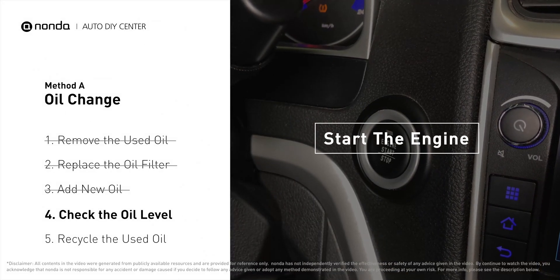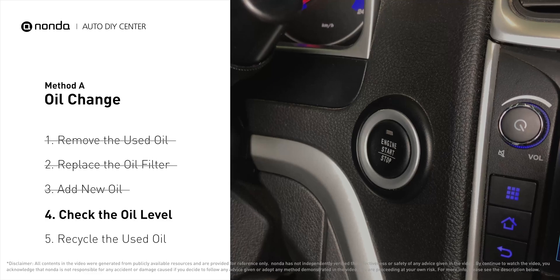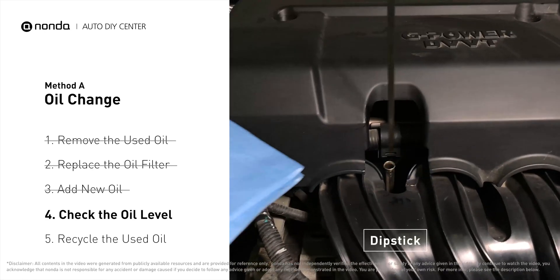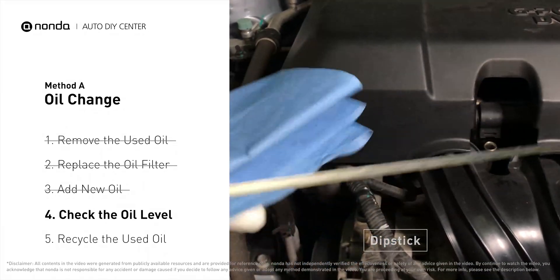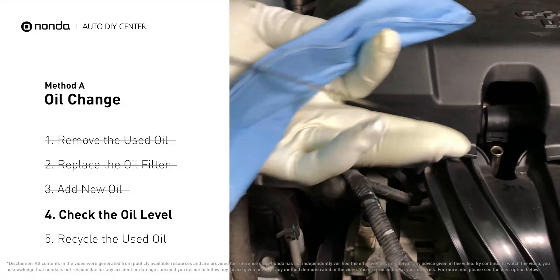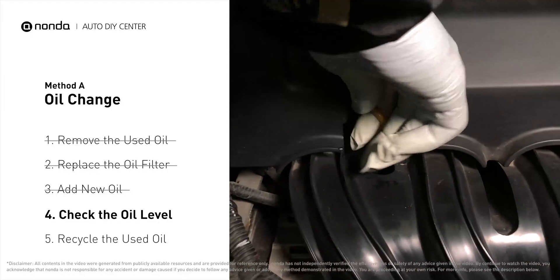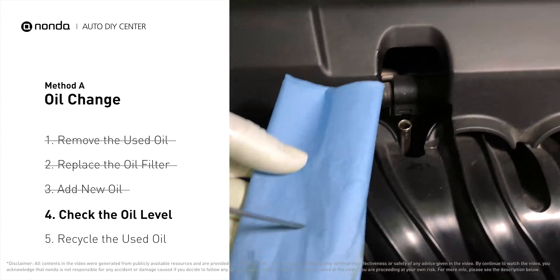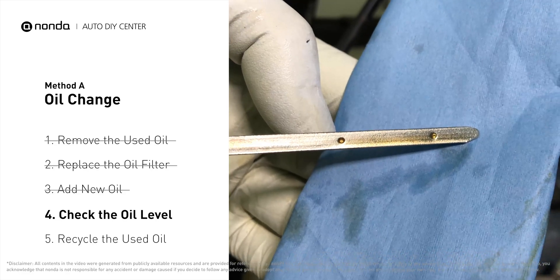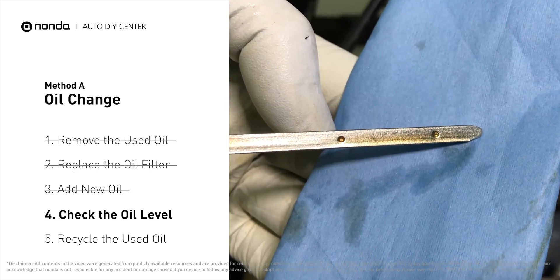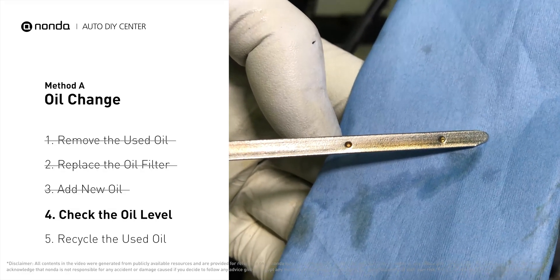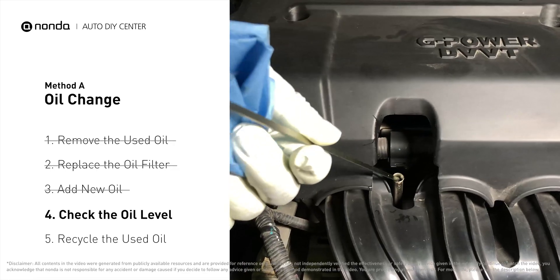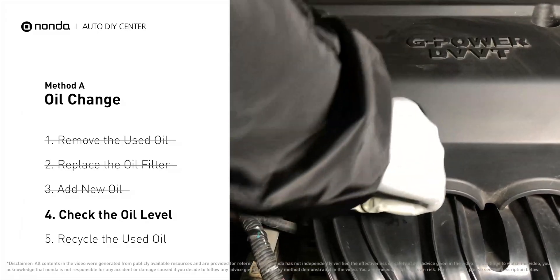To check oil levels, pull the dipstick out and clean it off. Replace the dipstick and pull it out again. The oil should be near the top dot or fill line. If it is close to the lower dot, you'll need to add more oil.